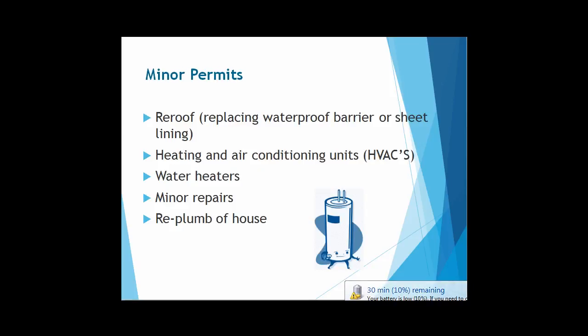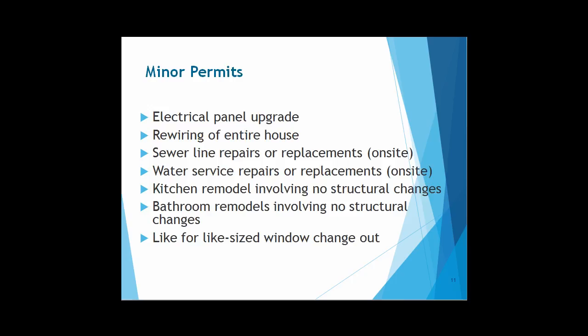We have a list of types of work that qualify as minor permits: re-roofing, replacing waterproof barrier or sheet lining, heating and air conditioning units — otherwise referred to as HVAC systems — water heaters, minor repairs, re-plumbing of a house, upgrading an electrical service panel, rewiring of an entire house, replacing sewer line or making repairs, water service repairs or replacements, kitchen remodels that do not involve any structural changes, bathroom remodels with no structural changes, and like-for-like window changeouts.